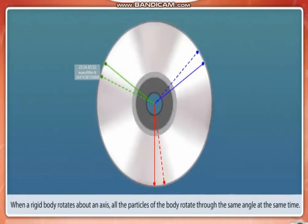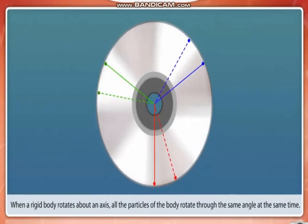When a rigid body rotates about an axis, all the particles of the body rotate through the same angle at the same time.